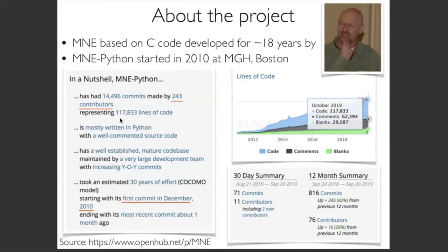In terms of lines of code, MNE Python is fairly large — about half the number of lines as Matplotlib, the plotting library everyone uses in Python. More than half the code is actual code, the rest is comments. There are more than 200 people who have contributed. There's also a metric that estimates how many years it would take to rewrite the entire software — the answer is 30 years.